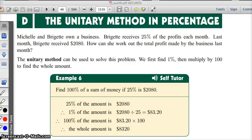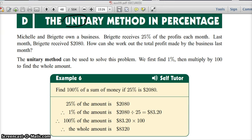So, what we're looking at here is a thing called the unitary method. And the word unitary has the word unit in it. And the word unit is meaning one. We're trying to find one percent. And if we can find one percent of a total, then we can find everything beyond that. And I'll tell you what I mean. Michelle and Bridget own a business. Bridget receives 25 percent of the profits each month. Last month, Bridget received that. So in this question, what we're trying to find out is, what is one percent worth? What is one unit worth? How can she work out the total profit made by the business last month? Because she only gets 25 percent of the profit. We're trying to find out, also, what Michelle gets. So the thing we've got to do is we've got to try and find the one percent. And it's not a difficult process.